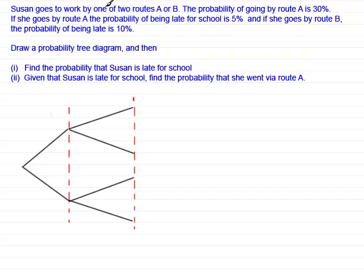Susan goes to work by one of two routes, A or B. The probability of going by route A is 30%, and if she goes by route A, the probability of her being late for school is 5%. And if she goes by route B, the probability of being late is 10%. And what you've got to do is draw a tree diagram to illustrate these probabilities first of all.